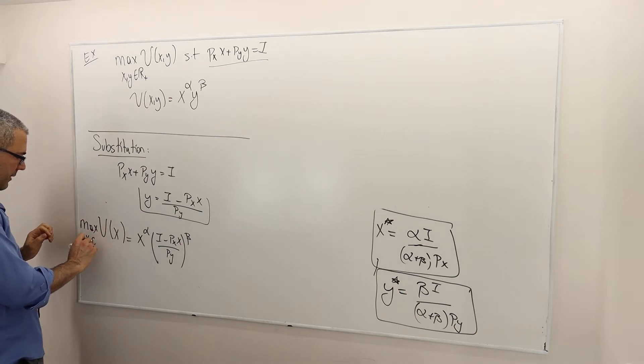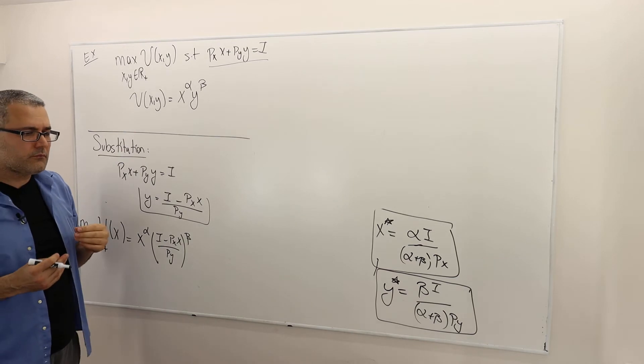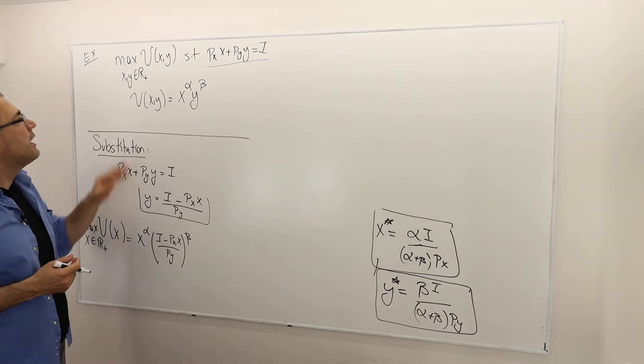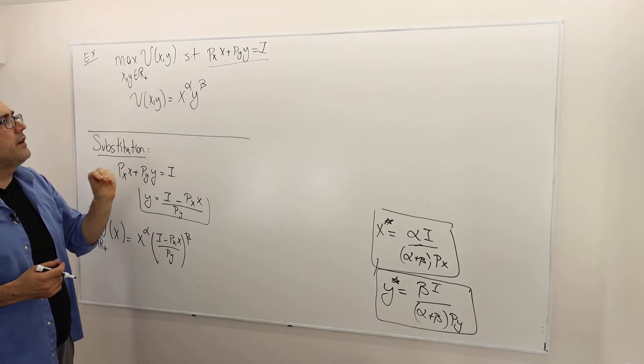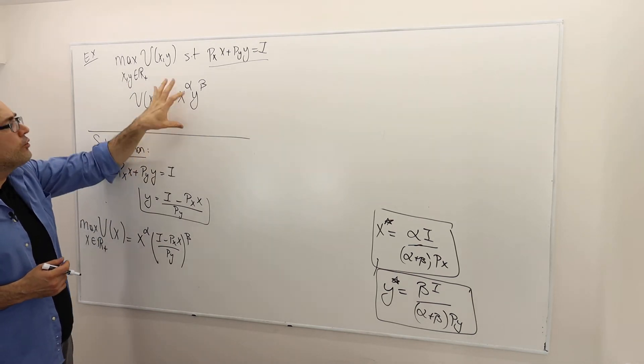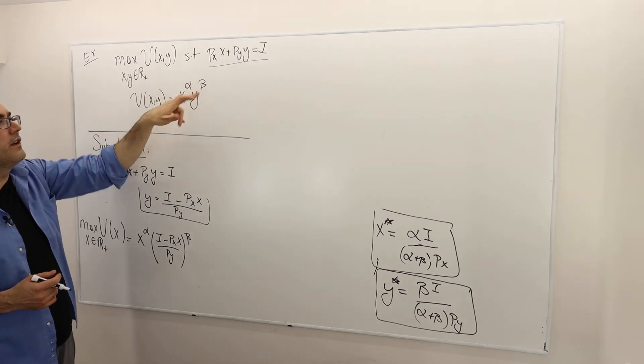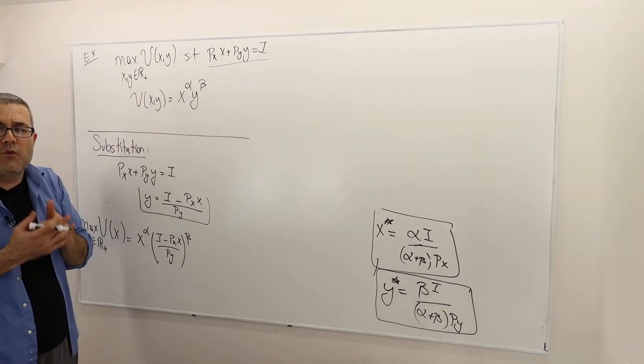Okay, so maximizing this utility function subject to this constraint is equivalent to maximizing this utility function by choosing X only. Max, by choosing X in R+. All right, well, don't forget to distinguish between the choice variables and fixed variables. In this problem, the fixed variables are the utility function, which means this functional form and therefore the alpha and beta. So we assume that we know those parameters.